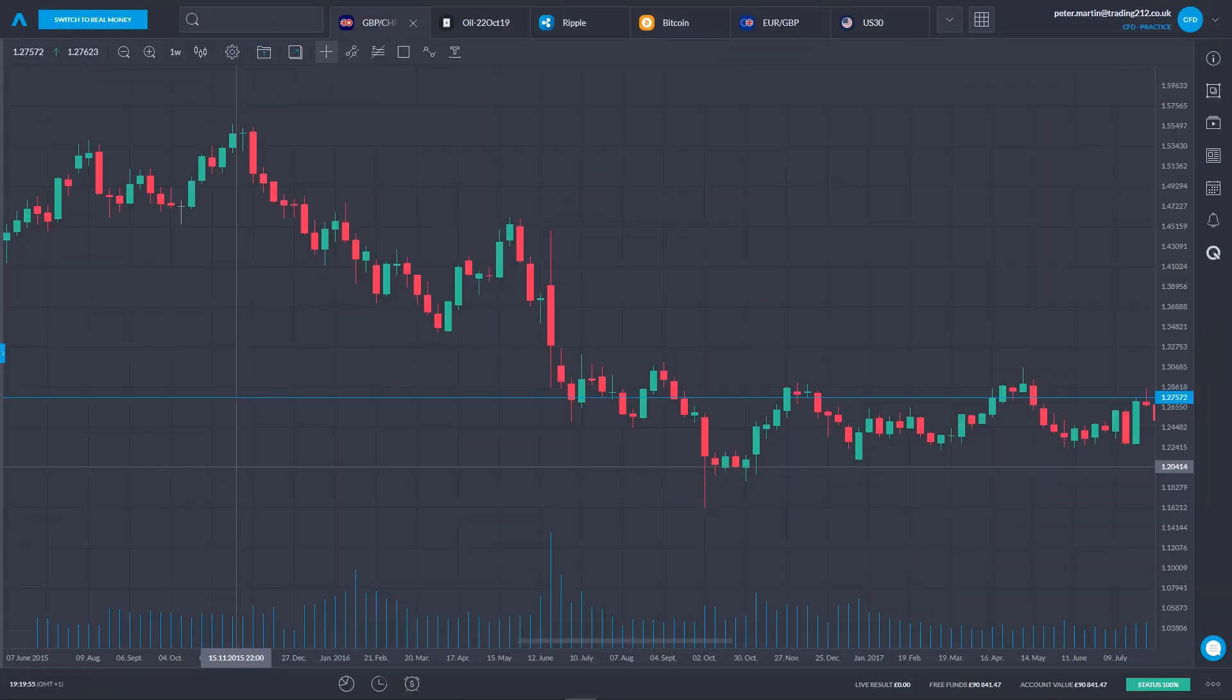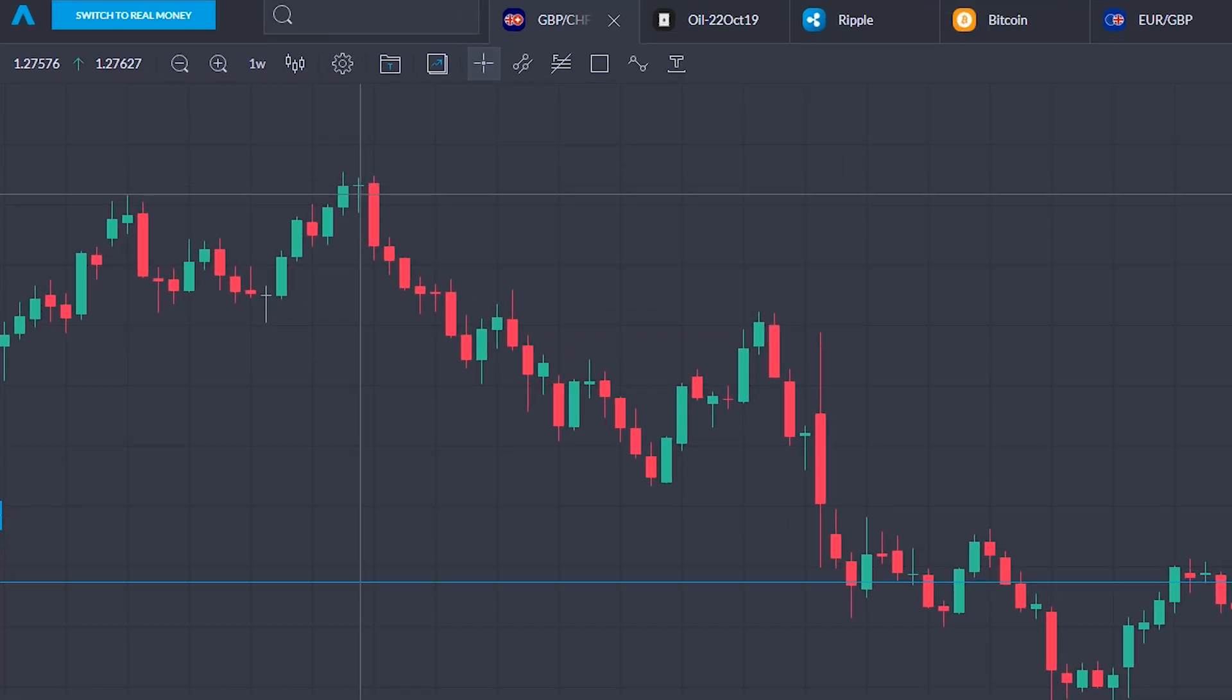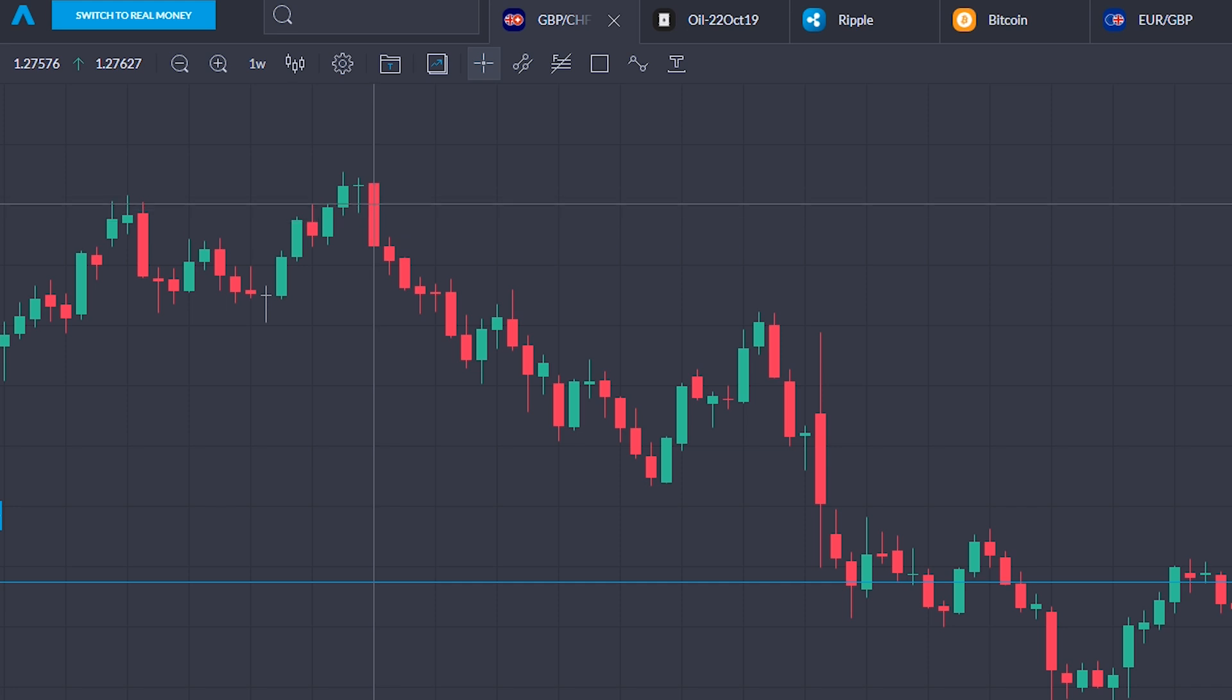So just to give you a couple of quick real-world examples of some of these patterns we've been looking at. This is a weekly chart of sterling against Swiss franc. And if we look at this top here, we can see that that is actually an evening star formation. We can see we've got the longish green body.